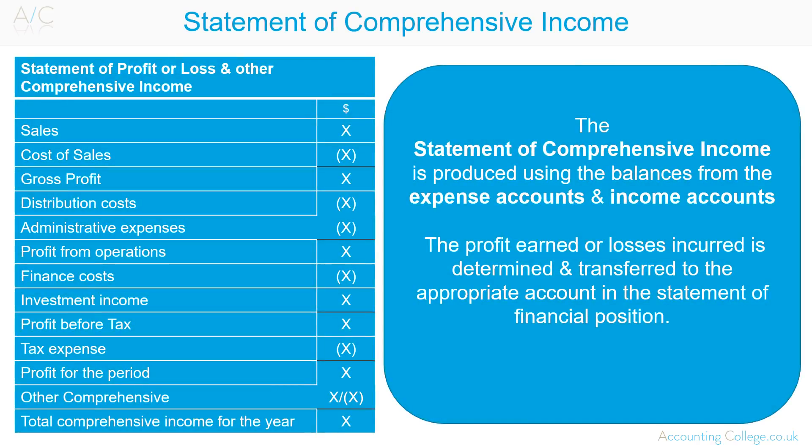The Statement of Comprehensive Income is produced using the balances from the expense accounts and income accounts. The profit earned or losses incurred is determined and transferred to the appropriate account in the Statement of Financial Position.